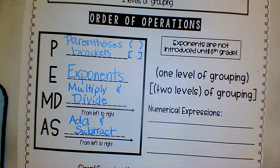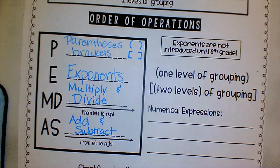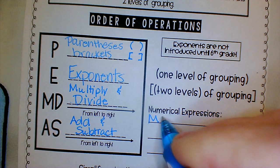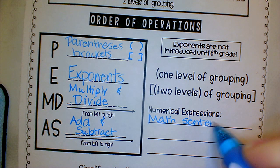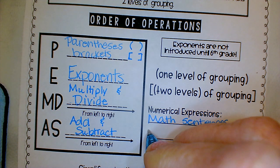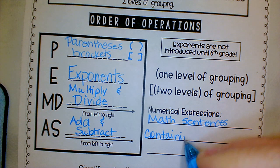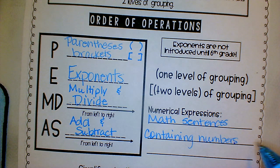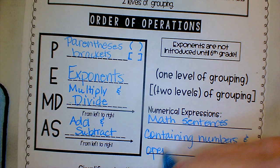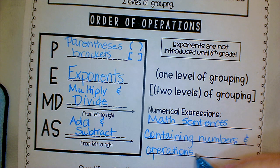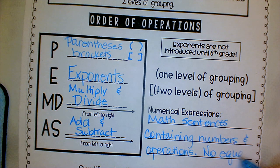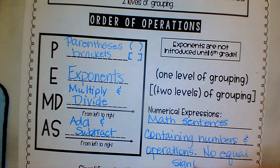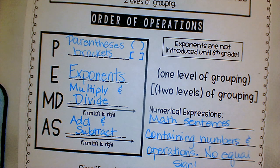Now we have numerical expressions. The definition says that that is math sentences containing numbers and operations with no equal sign. So we'll take a look at a few of those here in just a minute. Math sentences containing numbers and operations. There is no equal sign.